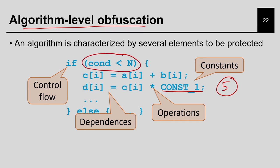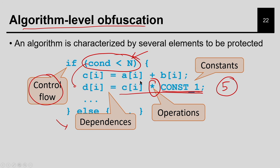What else can I lock? I can lock the control behavior. If this condition is true I am going to do operation 1, else operation 2. If I do not know what the condition operation is without the correct key, I do not know whether to take the if-else branch or the else branch, so I can lock the control flow. I can also lock operations - the user would not understand whether it is a multiply operation or plus operation until they have the correct key.